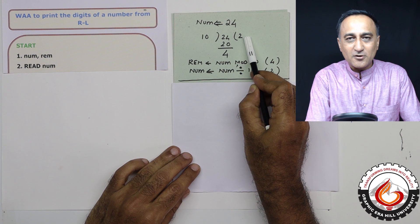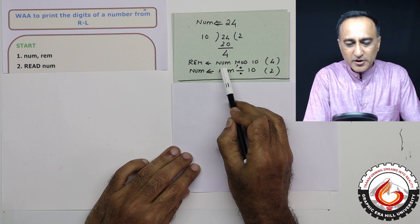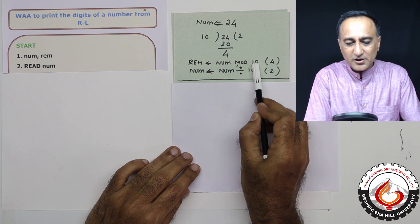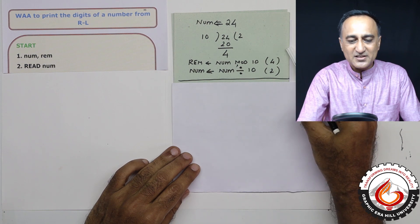Quotient is the result of a division operation, remainder is the result of a mod operation. So first thing what I do is I say remainder is number mod 10. So out of 24, 4 goes into remainder and I can print this 4 on the screen.